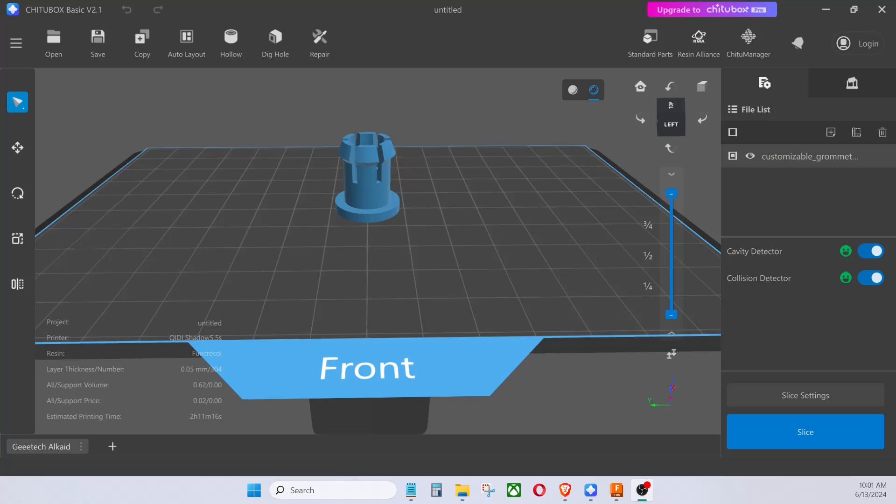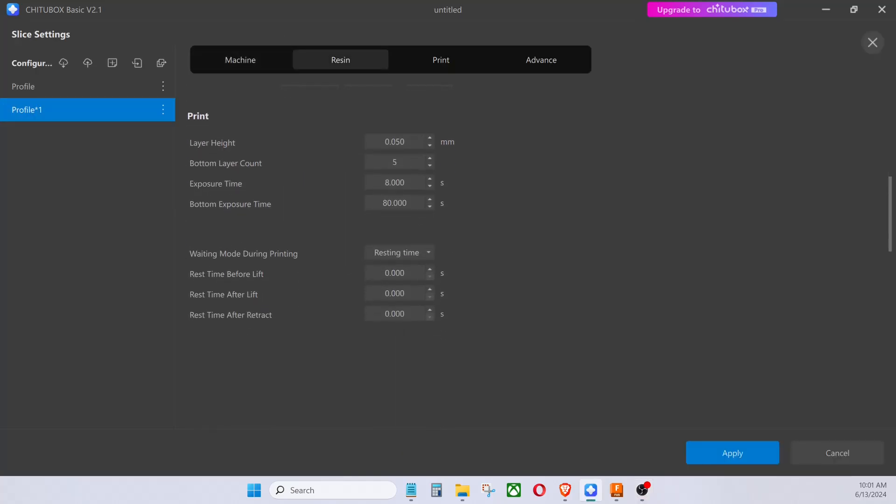This is what we are going to print. It is just a small grommet that you would push into a hole in sheetrock or plywood or something like that just to plug a hole. And here you go.